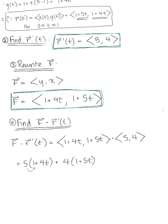And simplifying here, we'll distribute the 5 through and the 4 through, and then combine our like terms. So we have 5 plus 20t, plus 4 plus 20t, which leaves us with 9 plus 40t.